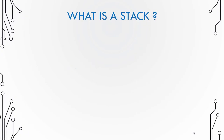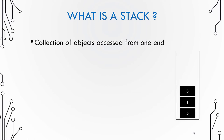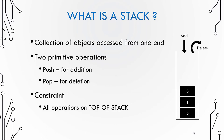What is a stack? The abstract data type definition of a stack says that it is a collection of objects accessed from one end — the top of the stack. There are two primitive operations: one for addition and one for deletion of elements. For addition you use the push operation, and for deletion you use the pop operation. All operations are done on the top of the stack.